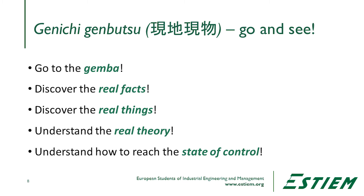In Japan, they call this Genichi Genbutsu — go and see. Go to the Gemba, the place where real things are happening. Discover the real facts, the real things, understand the real theory of what's happening, and understand how to get the process to a state of real control. Each of those realities is part of what happens in the Gemba.